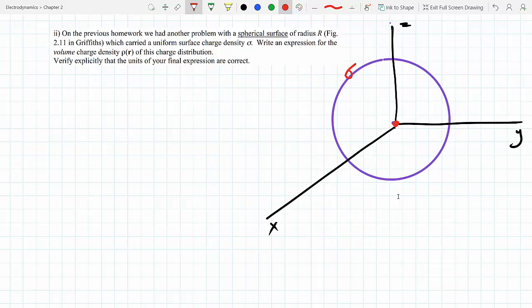So that means the volume charge density is going to be proportional to the Dirac delta function, delta of R minus capital R. Why? Because that tells you that if you are here the charge is zero, if you are here the charge is zero.